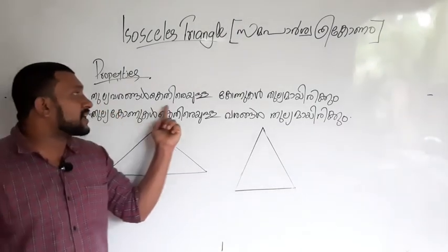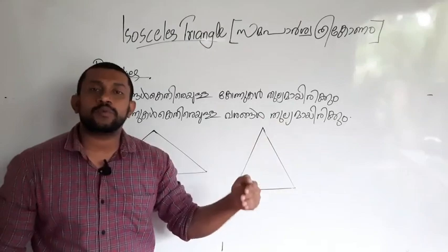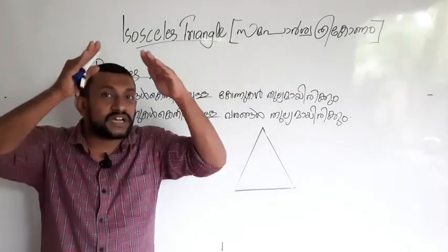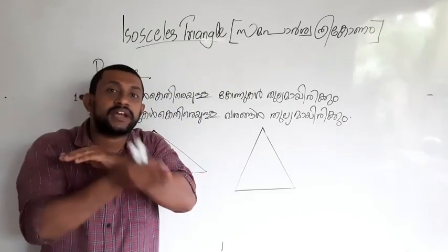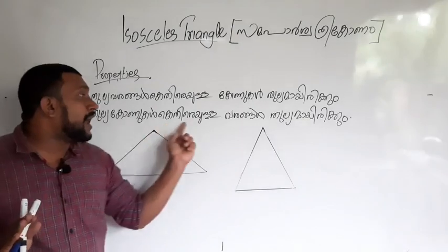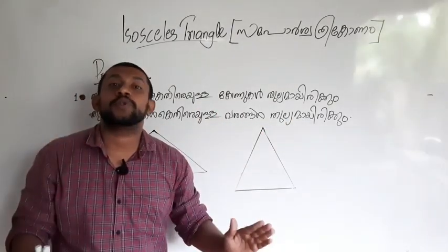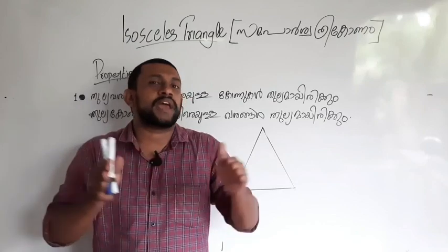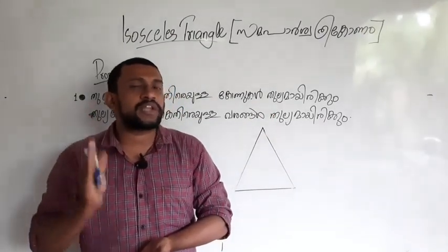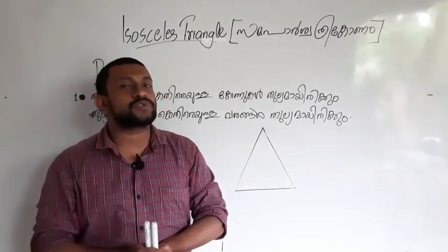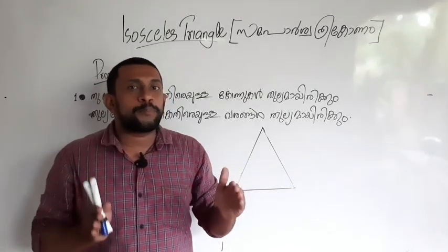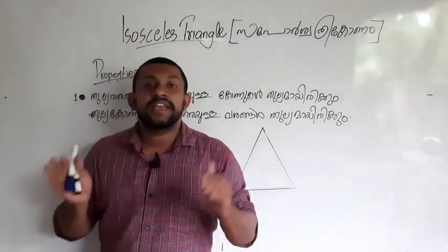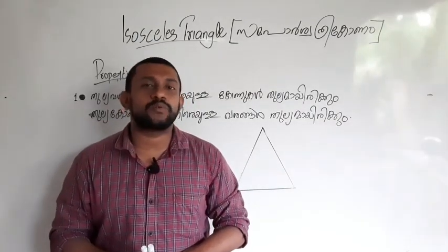I am going to explain it in a simple way. In English, we are going to use a little bit of our native language. We have three important triangles. Equal sides have opposite angles. Equal angles — the opposite angles are equal.